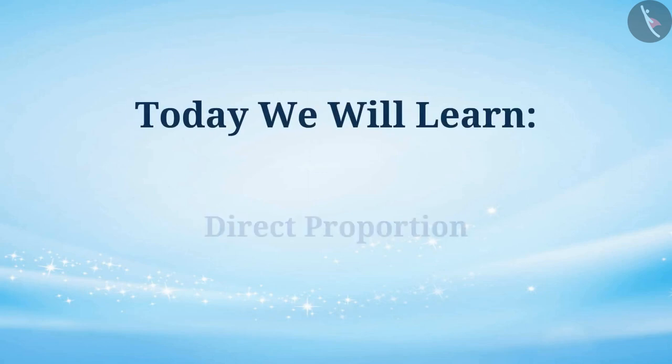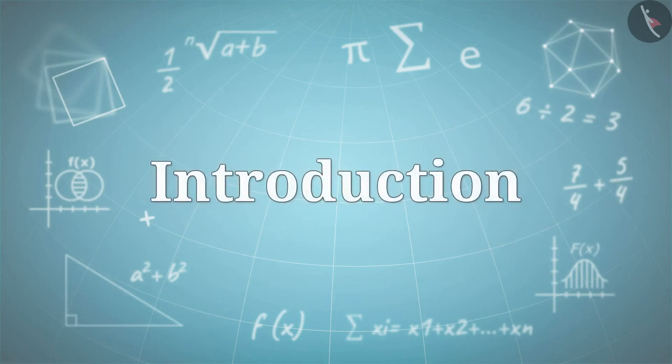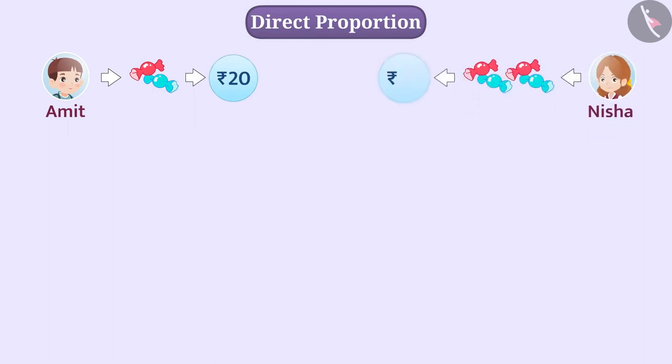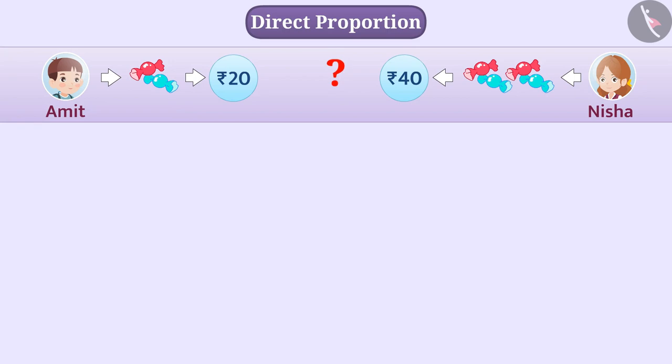Today we will learn about direct proportion. Amit bought two chocolates for 20 rupees and Nisha bought four chocolates for 40 rupees. Can you tell whose chocolates were more costly?